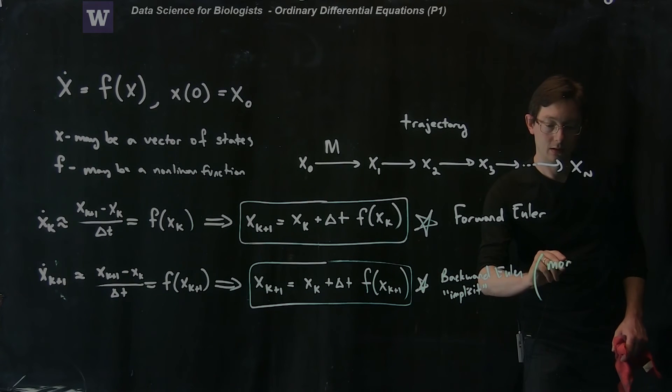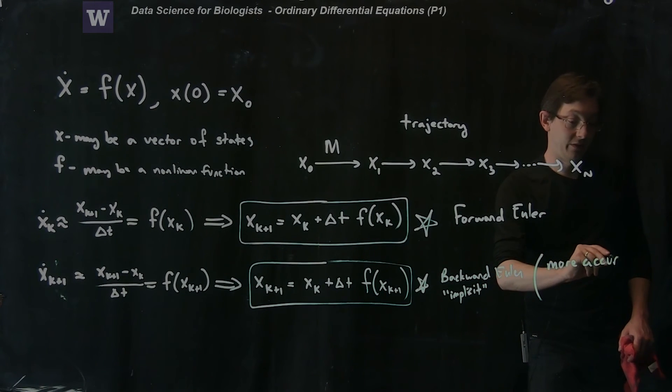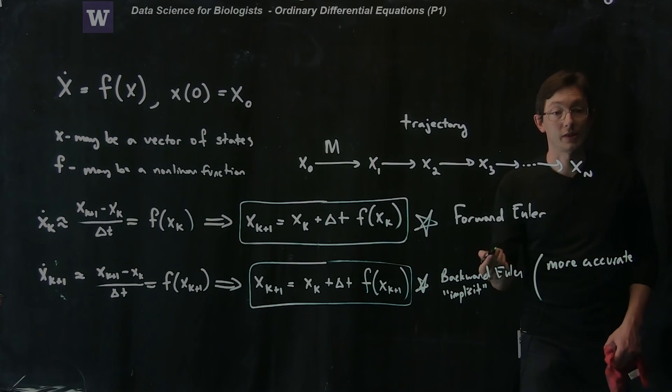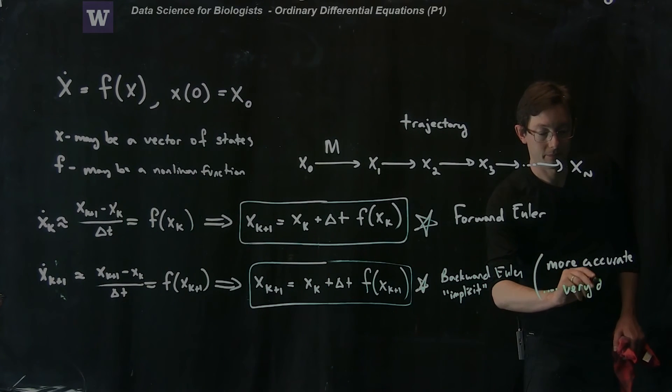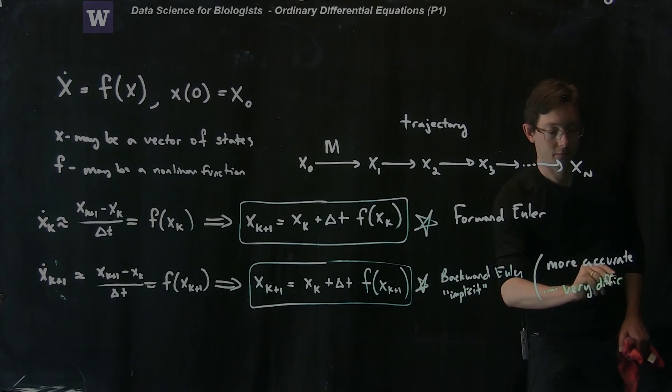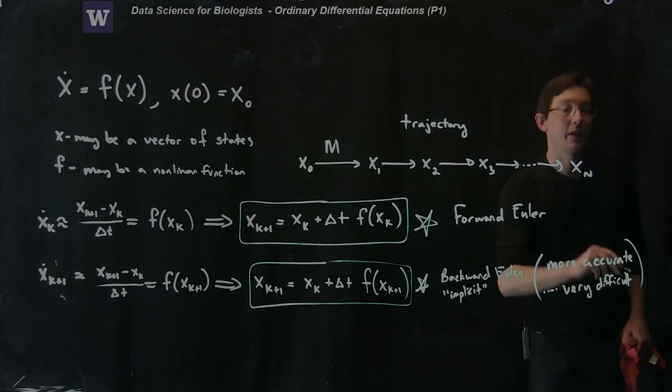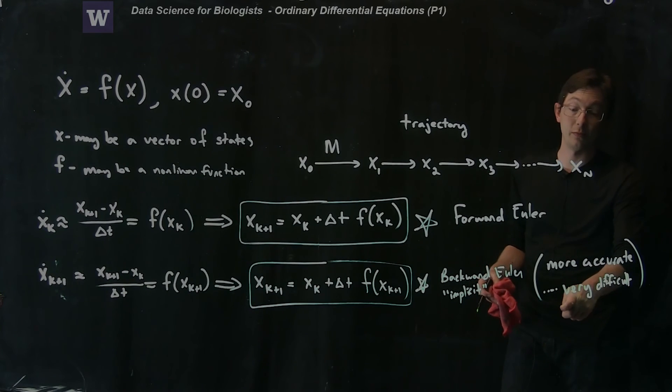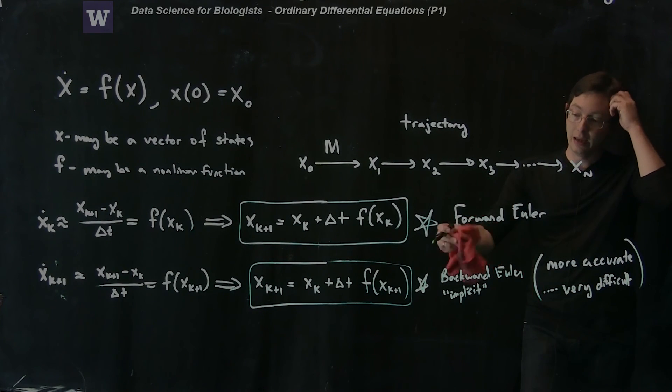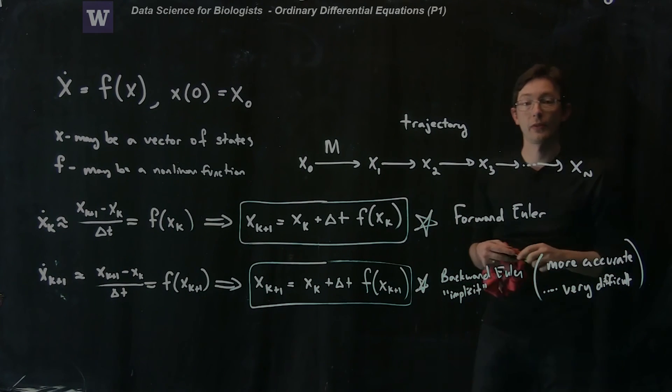So although this is more accurate, it's oftentimes a lot more accurate and more stable, it's very difficult sometimes. But accuracy and speed and stability count for a lot, so people oftentimes will use implicit algorithms instead of forward algorithms.